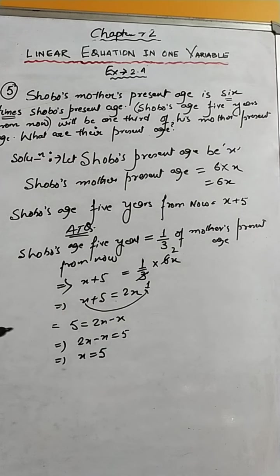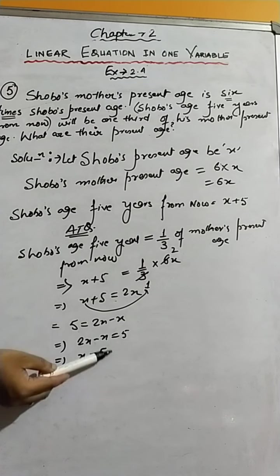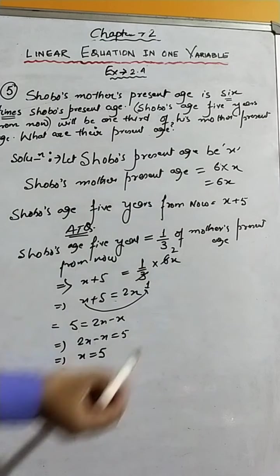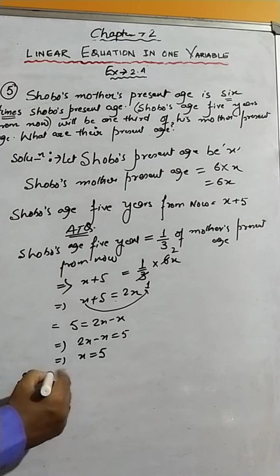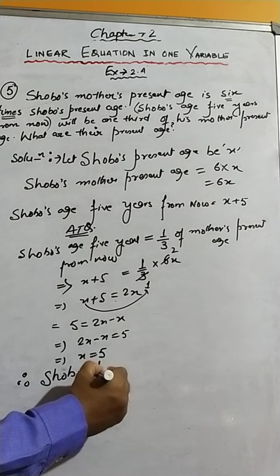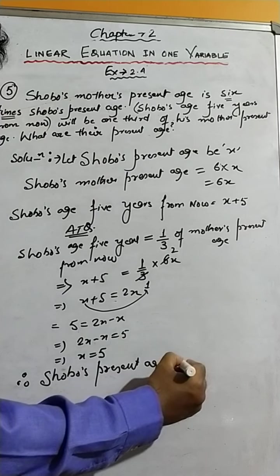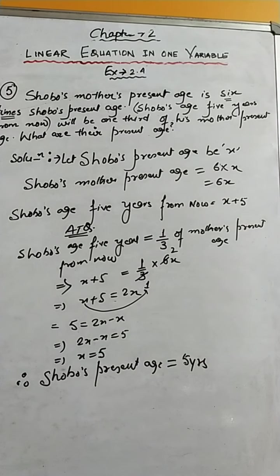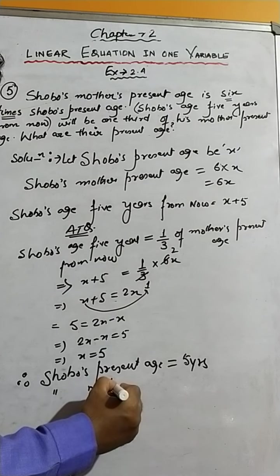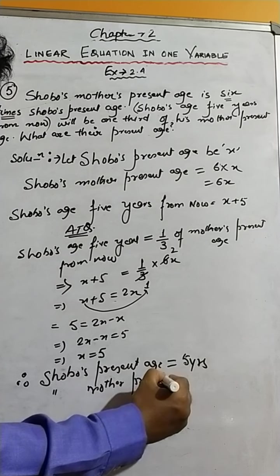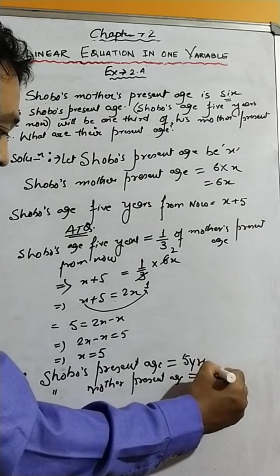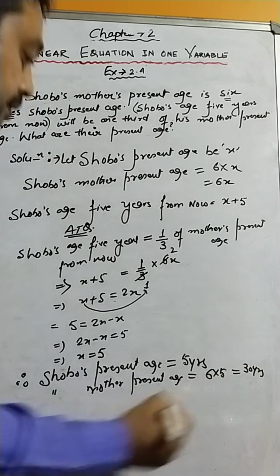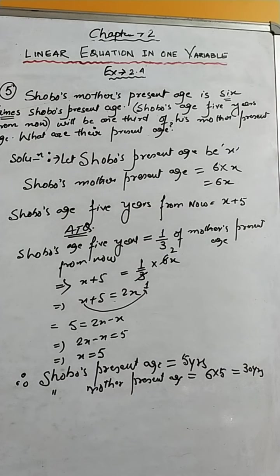X is Shobu's present age. Now we can find Shobu's mother's present age as well. Therefore, Shobu's present age is five years, and Shobu's mother's present age is six times five, which is thirty years. That's the final answer for question number five. In my next video I will explain questions six and seven. Thank you, God bless you all.